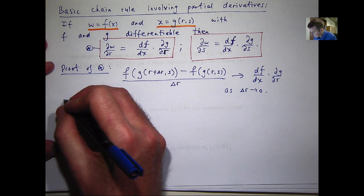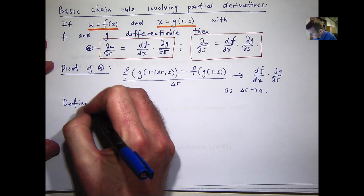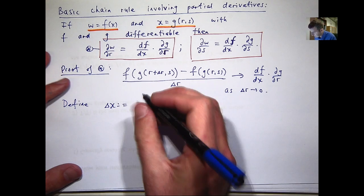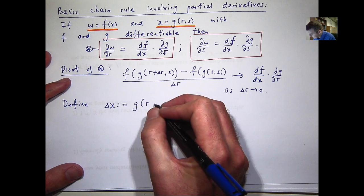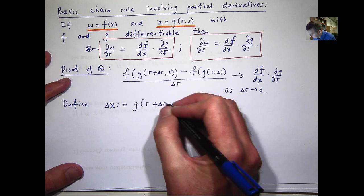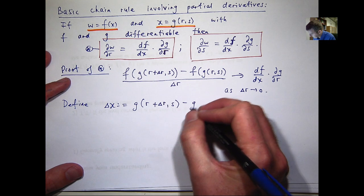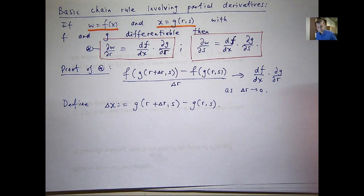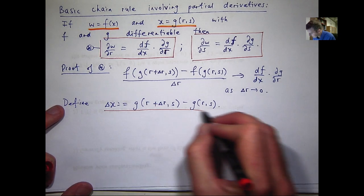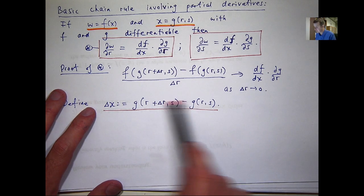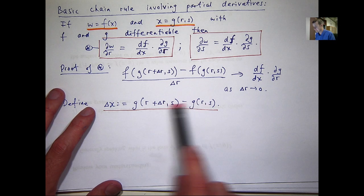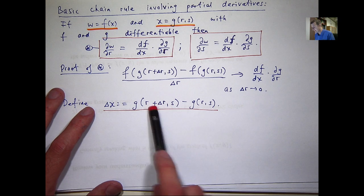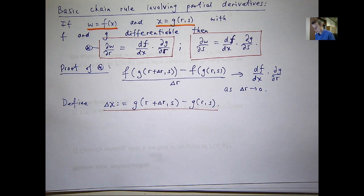Now, first notation. I'm going to define the following difference as delta x. And since g is a differentiable function, note that I've essentially just changed, I've got a delta r in there, so I'm sort of changing the first variable, and I'm leaving the second variable alone.